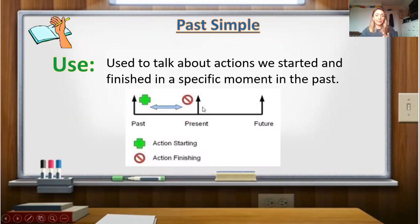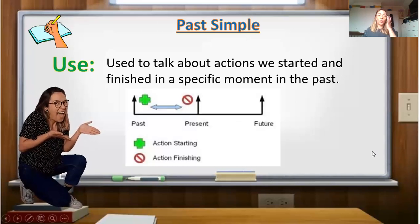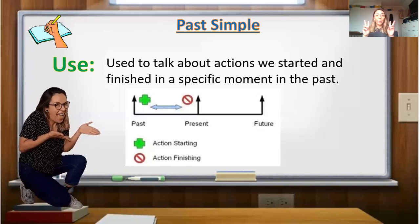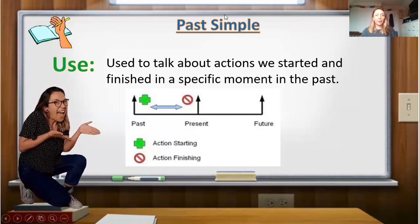So Past Simple is a tense, es un tiempo verbal that we use to talk about actions we started and finished in a specific moment in the past. This would be the timeline for Past Simple. As you can see here, this is the present, like now. This is our present. And the Past Simple is used to talk or to express actions here in this part of the time. It's an action you already started and finished in the past. So, I need you please now, open your English copybook and write the title Past Simple, the use and the timeline.